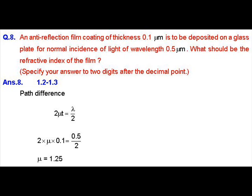We have the value of thickness t as 0.1, and we have the value of lambda as 0.5. Both are in same units, that is micrometers. So we can calculate the refractive index here as 2 mu t equals lambda, that is 0.5 divided by 2. So we will get the refractive index as 1.25. Thank you.